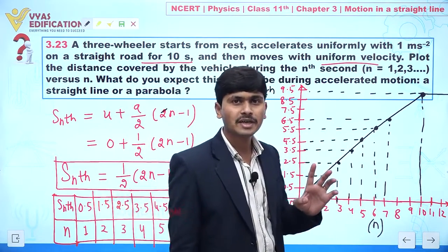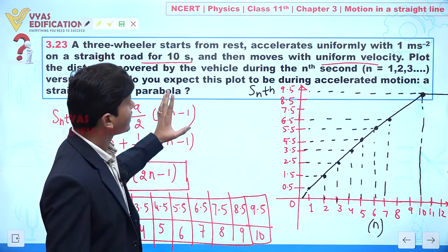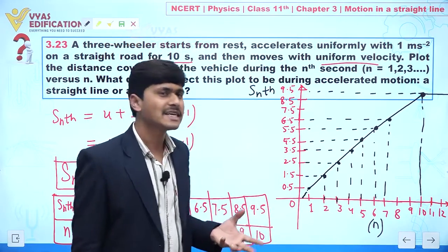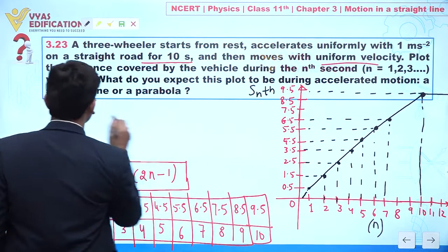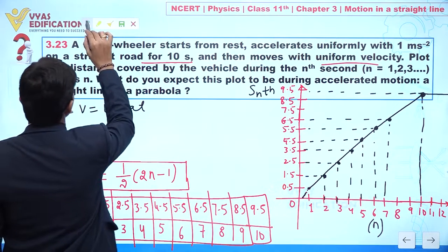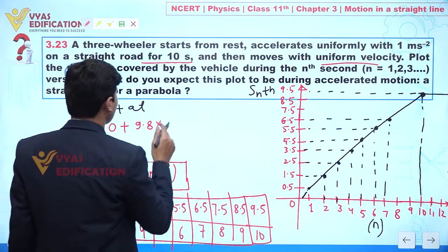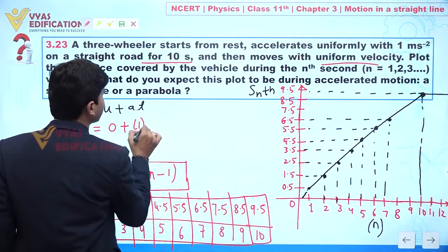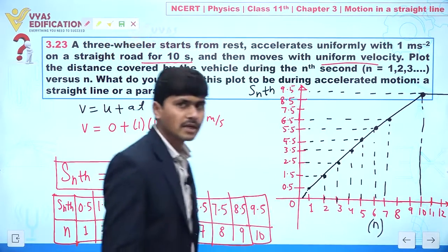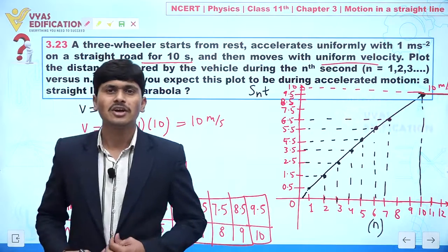At n = 10, Sₙ = 9.5 m. After 10 seconds the vehicle moves with uniform velocity. We can find that velocity using v = u + at: v = 0 + 1 × 10 = 10 meters per second. So after n = 10, the velocity of the three-wheeler is 10 m/s.